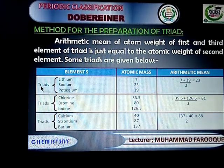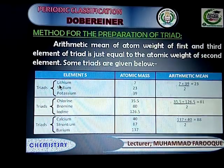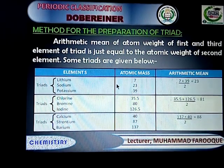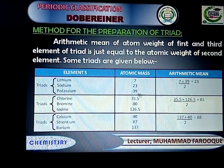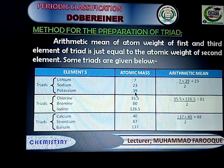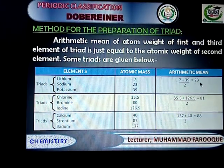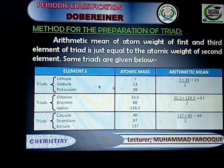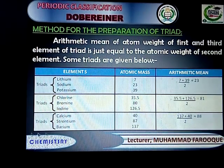Three triads are shown in the table. We will discuss triad number one, which contains lithium, sodium, and potassium. The arithmetic mean of lithium and potassium is equal to the mass of sodium. The mass of lithium is 7 and the mass of potassium is 39. Their arithmetic mean, as shown in the table, is equal to 23, which is the atomic mass of sodium. The remaining two triads you will solve at home.